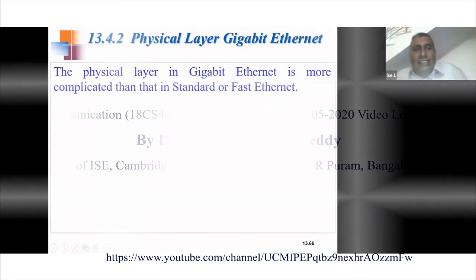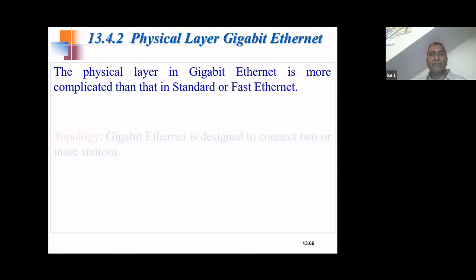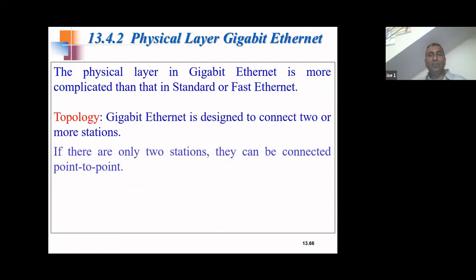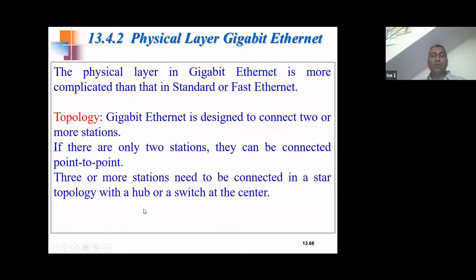Now we will see the design of the physical layer in Gigabit Ethernet. The physical layer of Gigabit Ethernet was more complicated and complex compared to standard or past Ethernet. The topology of Gigabit Ethernet is designed to connect two or more stations. If there are only two stations, it is a point-to-point connection; if there are three or more stations, it is a star topology with a hub or switch at the center.